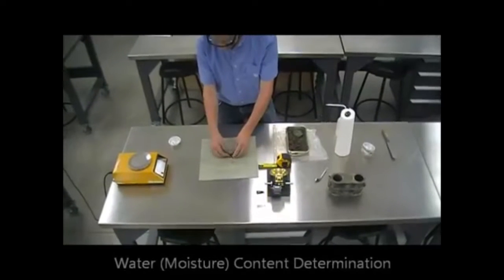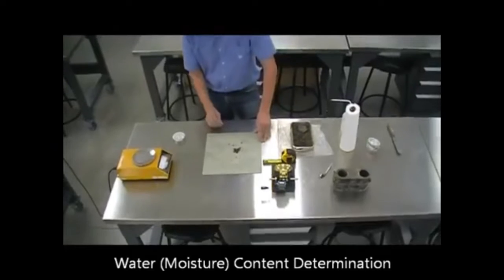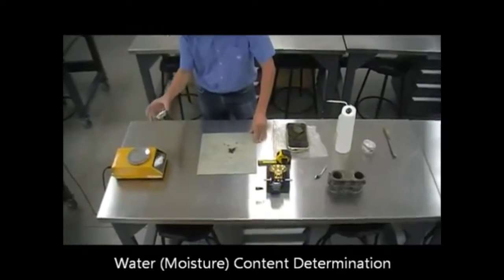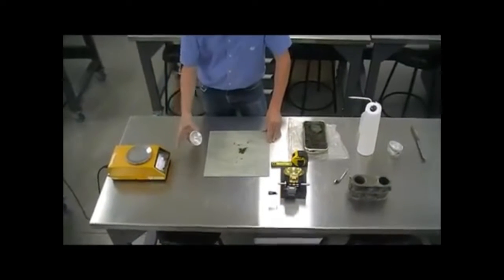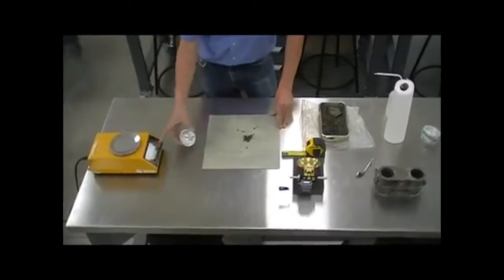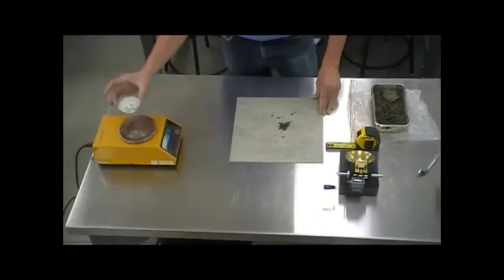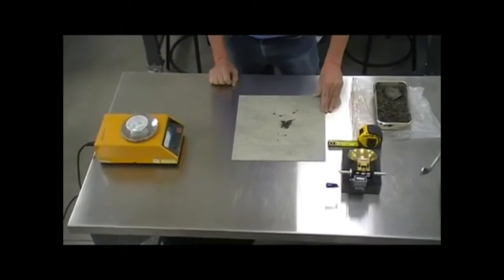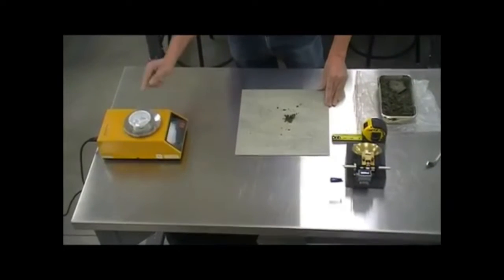Once we achieve the right consistency, the procedure is determining that moisture content. For that purpose, we use the water content determination equipment. It's a scale capable of reading to the one-hundredths of a gram. We tare it to zero, weigh the dish, and record that weight. So that would be the weight of the dish or cup.